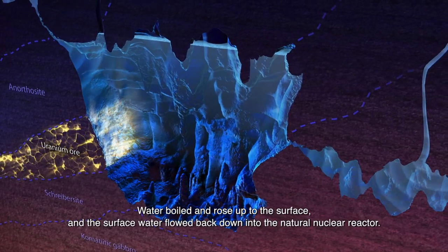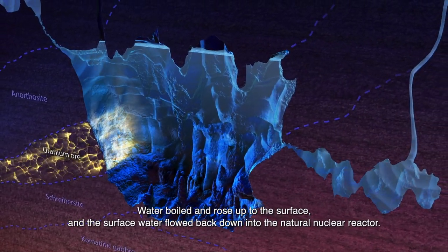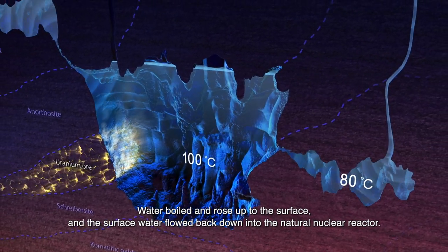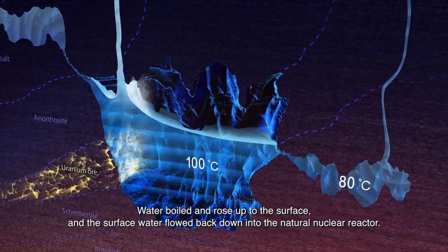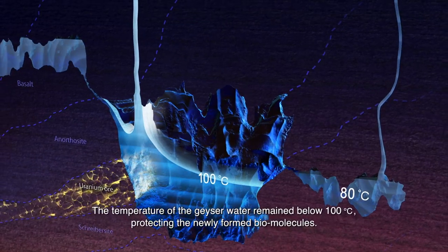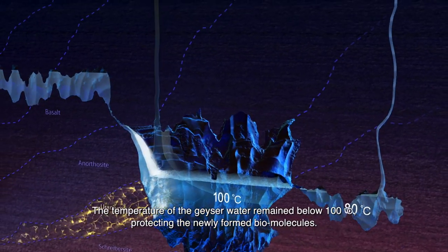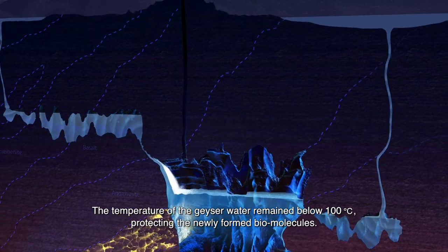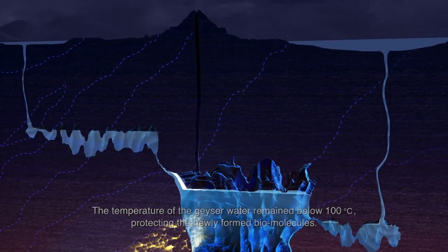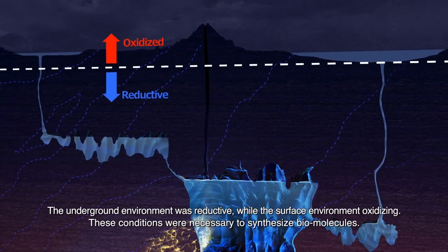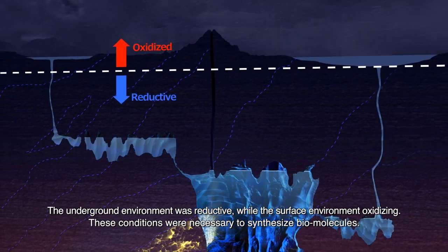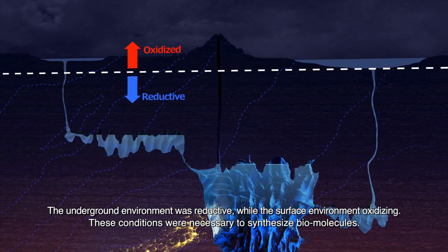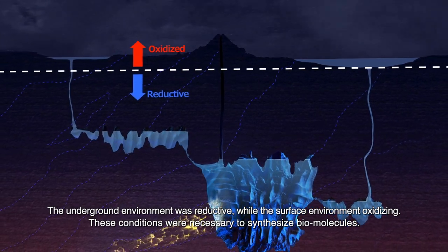Water boiled and rose up to the surface, and the surface water flowed back down into the natural nuclear reactor. The temperature of the geyser water remained below 100 degrees, protecting the newly formed biomolecules. The underground environment was reductive, while the surface environment was oxidizing. These conditions were necessary to synthesize biomolecules.